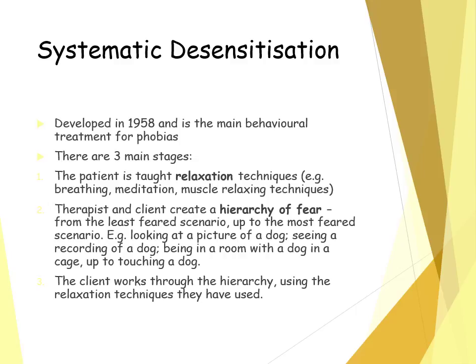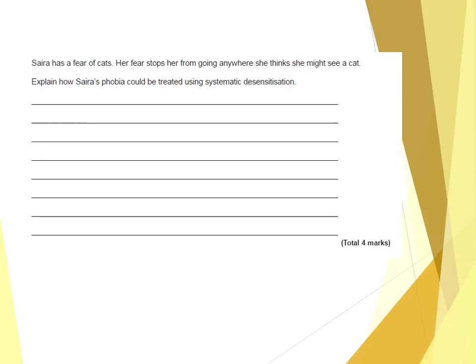If they reach a level and they are unable to complete it, the session will end and they will restart the next session at that stage in the hierarchy. In this example, we're going to talk about how phobias could be treated using systematic desensitisation, and it's important that we relate it back to that situation.